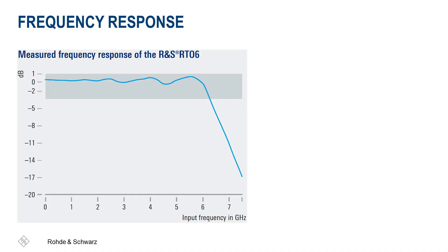Hi, in this short video I want to show you how you can benefit from the flat frequency response and the outstanding noise characteristics of the RT06 oscilloscope. First, let's have a look at the frequency response. This graph shows that it's very flat up to the maximum instrument bandwidth. And even at 6 GHz, the frequency response is above the minus 3 dB level, which is very good compared to other oscilloscopes.